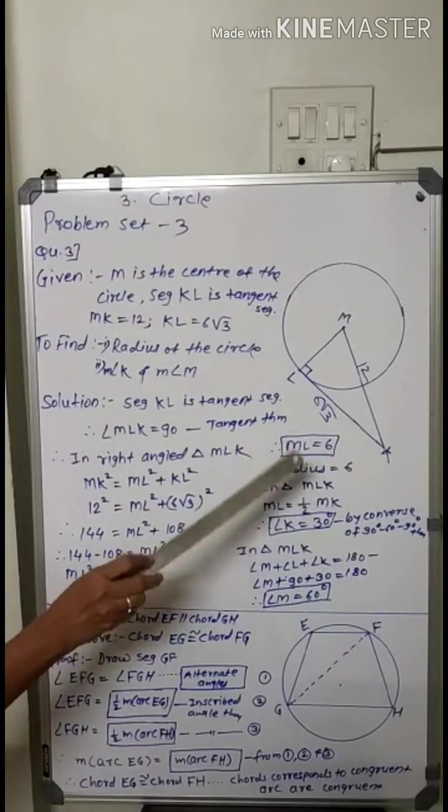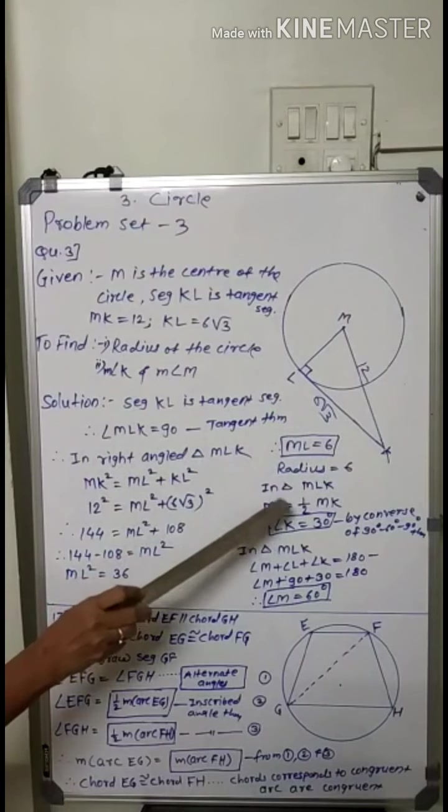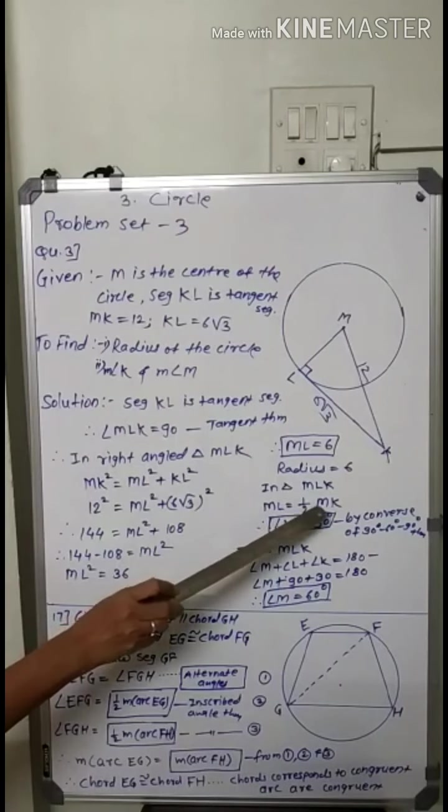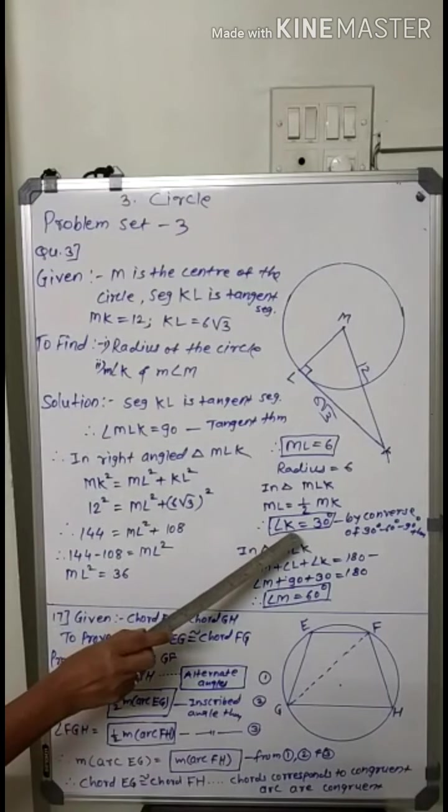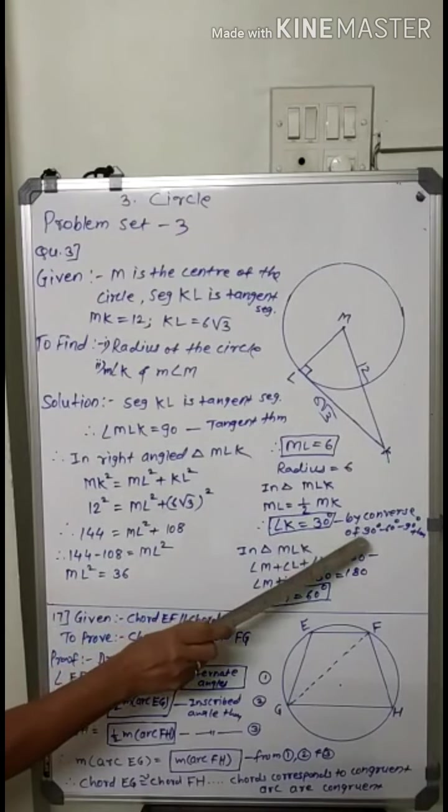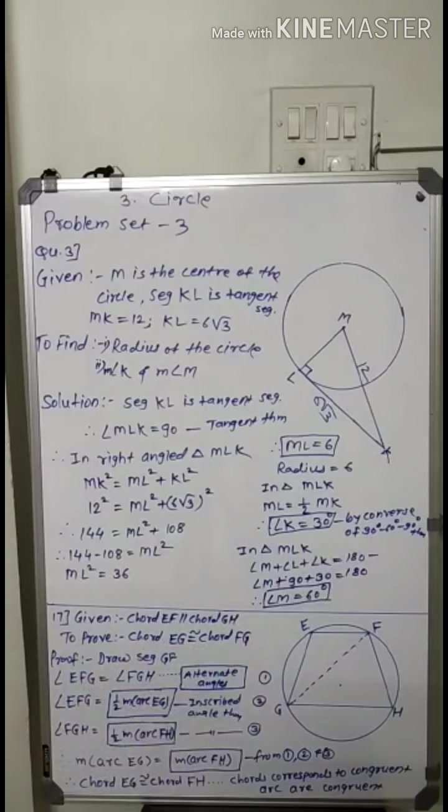Now in triangle mlk, ml equal to half of mk, which is 6, and mk is the hypotenuse. So angle k equal to 30 degrees by converse of 30, 60, 90 degree theorem.